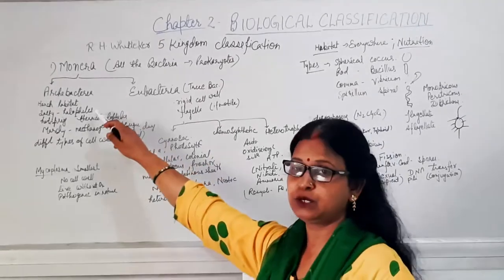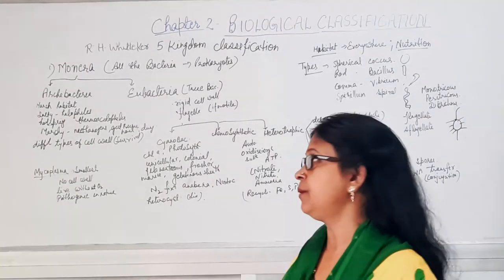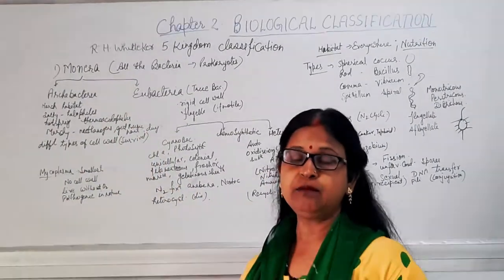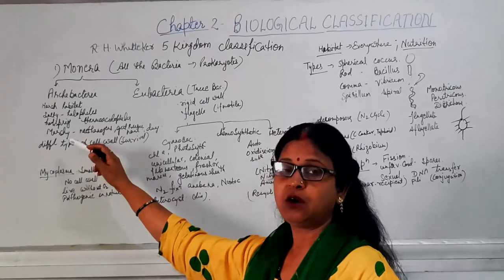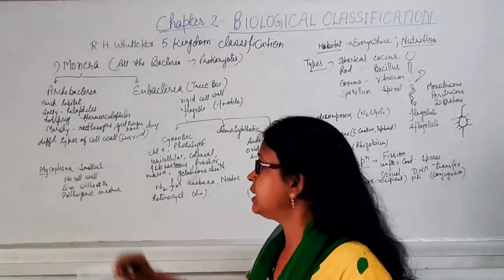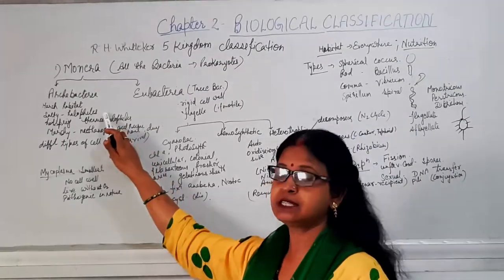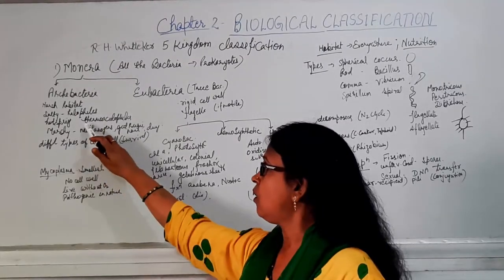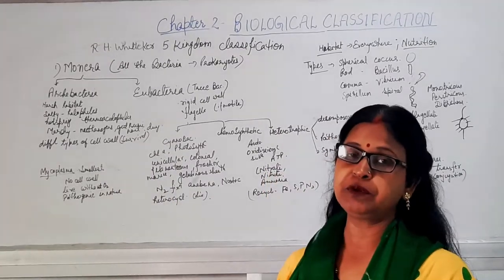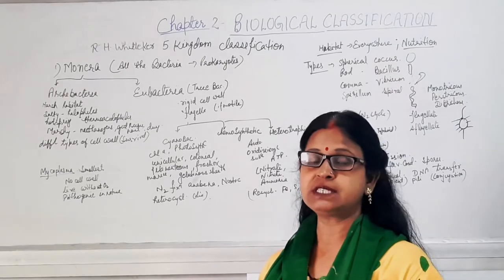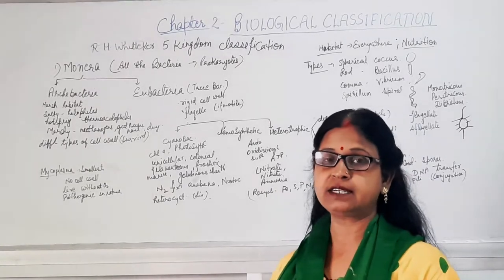All bacteria are categorized into Archaebacteria and Eubacteria. Archaebacteria live in the most harsh conditions like very salty water, hot springs, and marshy areas. Depending on habitat, they are: halophiles (salty areas), thermoacidophiles (hot springs), and methanogens (marshy areas or gut of cattle), which produce the gas methane — that is why dung of cattle has a characteristic odor.